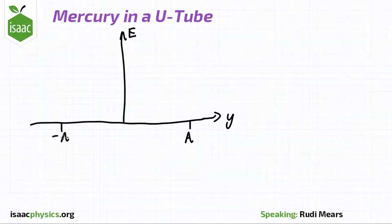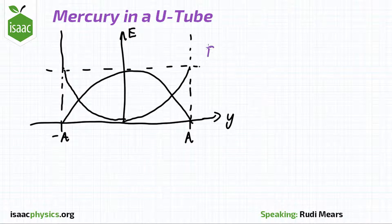One feature of SHM is the way energy oscillates between kinetic energy and potential energy. The easiest way to find the total energy of oscillation is to catch a system when all the energy it's moving around is in one form.